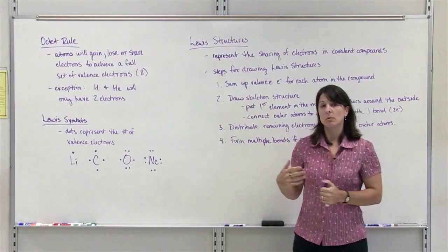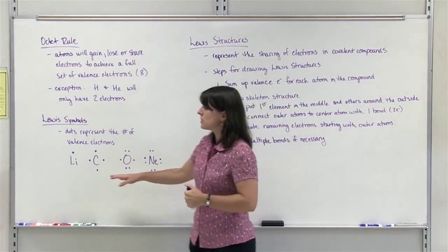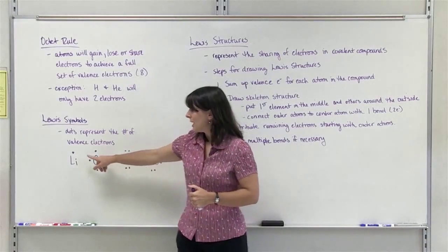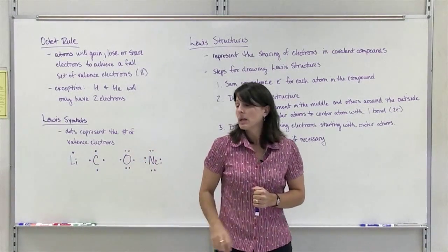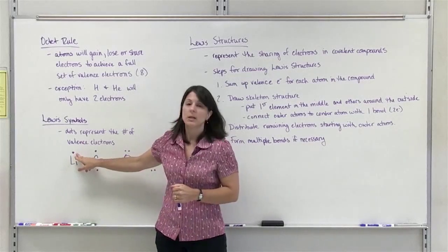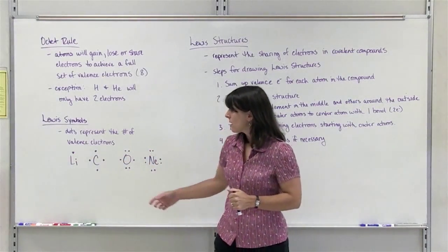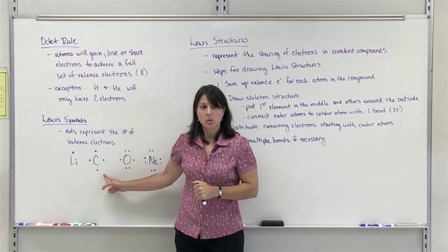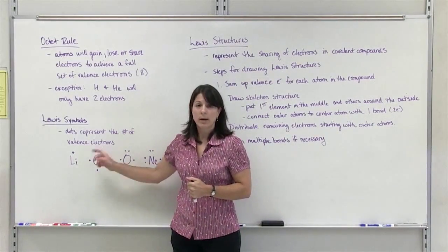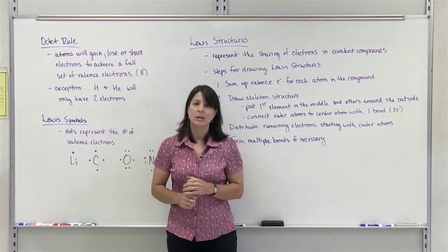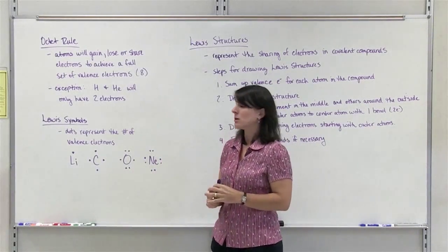We can represent the number of valence electrons in an element using Lewis symbols. We will use a dot to represent the number of valence electrons. Lithium only has 1 valence electron because it's in group 1A on the periodic table. Carbon has 4 valence electrons — it's in group 4A. The group number for a representative element tells you how many valence electrons it has.